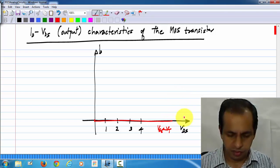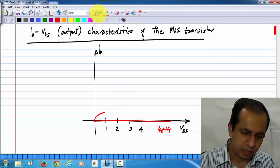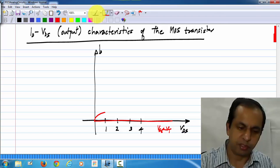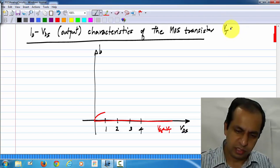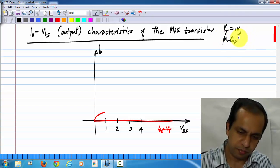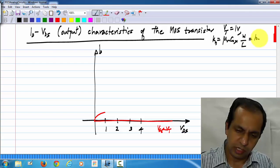And for let's say VGS of 2 volts. By the way, I am still assuming the same transistor that I have always been using in the examples, which is a transistor which has a threshold voltage of 1 volt and a current factor of 100 microampere per volt square.